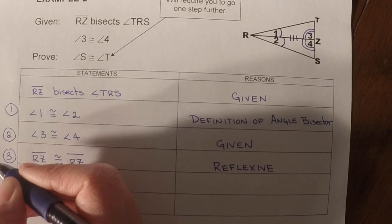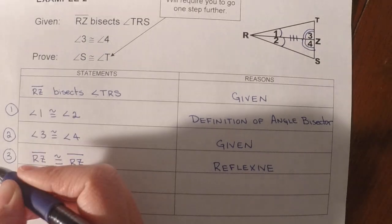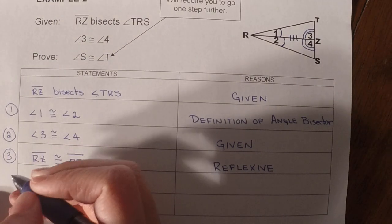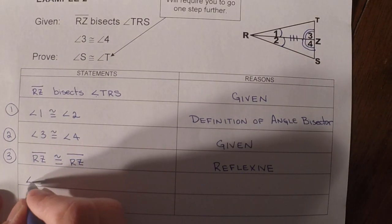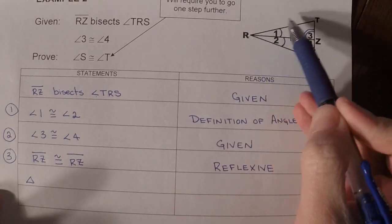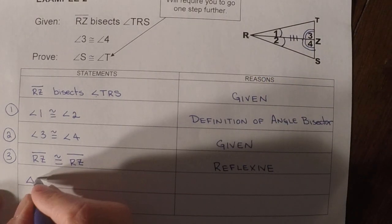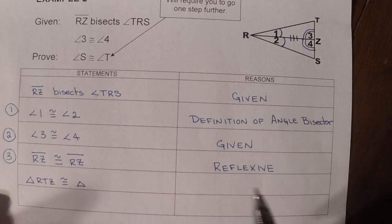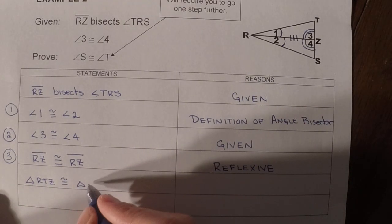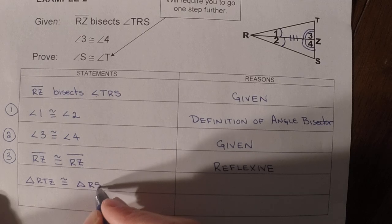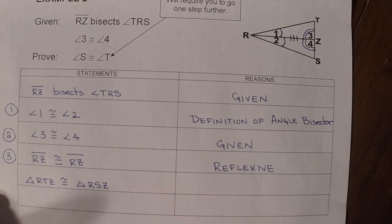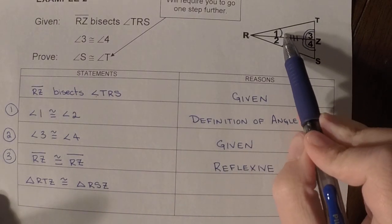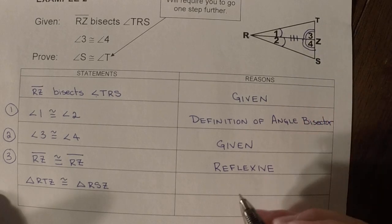So that's our third congruency. And then our last step on the old problems was to go ahead and state that the triangles were congruent. So we would go ahead and put triangle RTZ congruent to triangle RSZ. And this would be angle side angle.